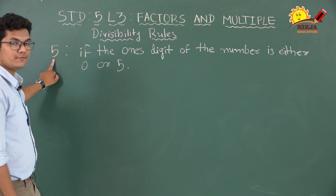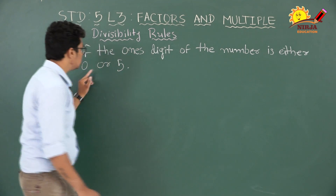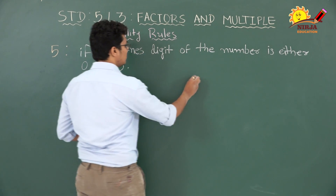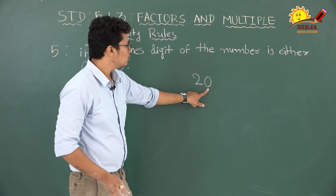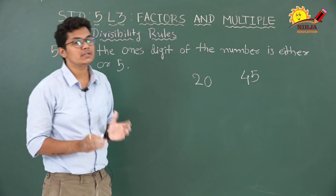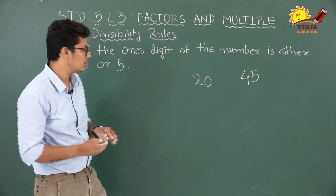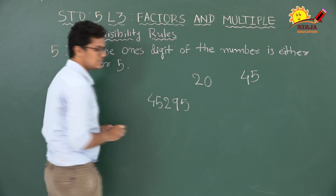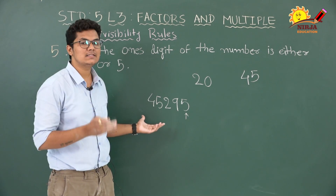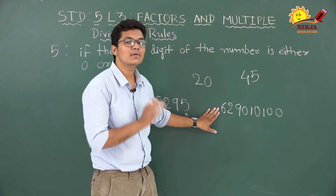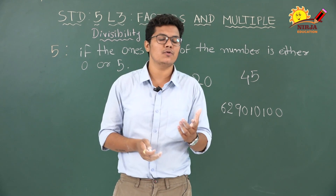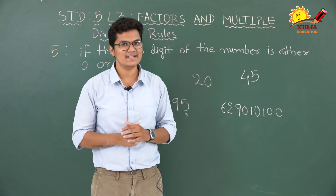This one is very simple. A number is divisible by 5 if the ones digit of the number is either 0 or 5. For example, 20 — the ones place digit is 0, so it is divisible by 5. For example, 45 — the ones place digit is 5, so it is divisible by 5. Any number ending with 0 or 5 at the ones place is exactly divisible by 5. For a large number, if the ones place is 5 then it is divisible by 5; if the ones place is 0 then it is also exactly divisible by 5.